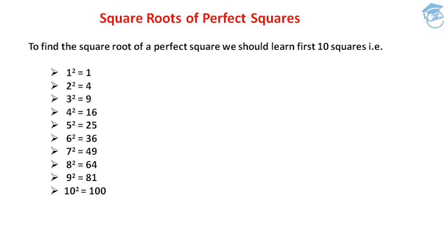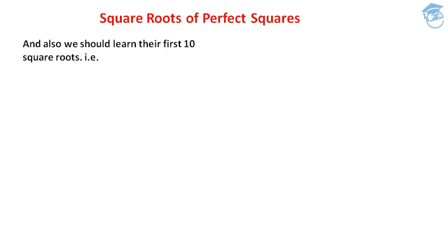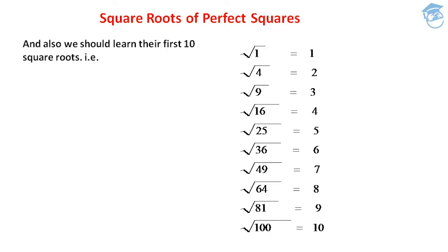The next thing that we have to learn is the first 10 square roots: √1=1, √4=2, √9=3, √16=4, √25=5, √36=6, √49=7, √64=8, √81=9, and √100=10.